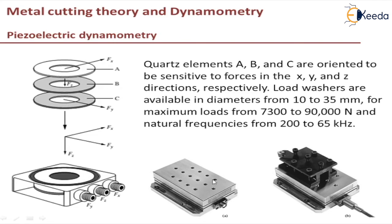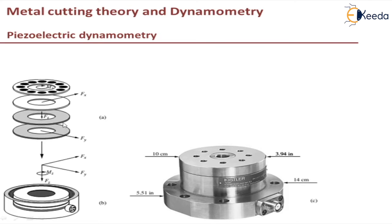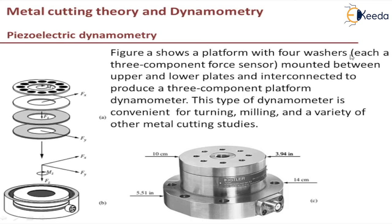This figure shows the dynamometer with a tool holding attachment mounted on a top plate. Such a dynamometer would be used in turning studies with tools of moderate size, and it can also be used for turning, milling, and other operations. In one configuration, one more washer is added along with the three washers to measure the moment. The figure shows a platform with four washers, each a three-component force sensor, mounted between upper and lower plates and interconnected to produce a three-component platform dynamometer. This type of dynamometer is convenient for turning, milling, and a variety of other metal cutting studies.